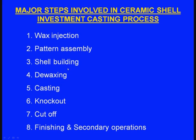The wax assembly or wax pattern is dipped inside the ceramic slurry, taken out, and stucco is sprinkled around the pattern, then dried. This is repeated — dipped again inside the ceramic slurry, taken out, stucco sprinkled and dried. This cycle is repeated 5 to 7 times. Finally, a shell is created. After the shell is created it is dried, then de-waxing is done. Next steps include: casting, knockout, cutoff, and finishing and secondary operations.